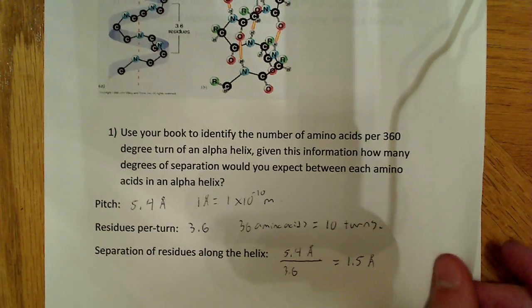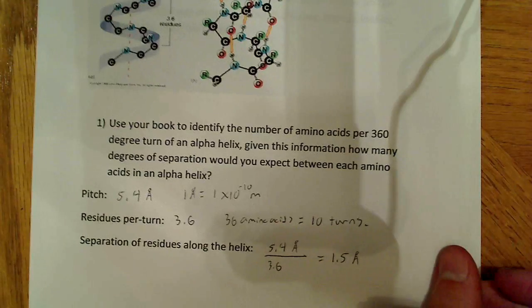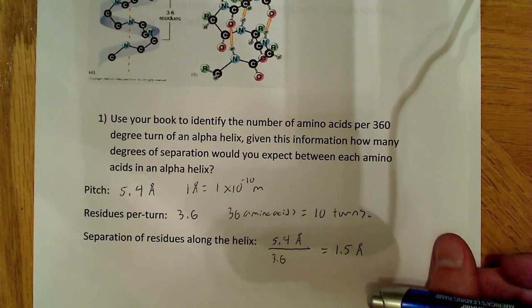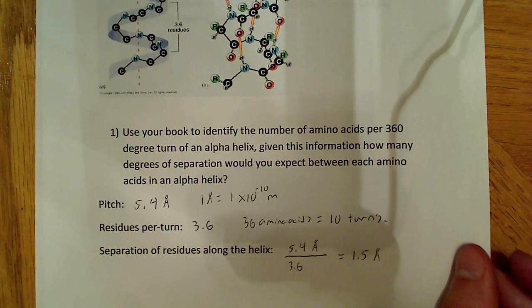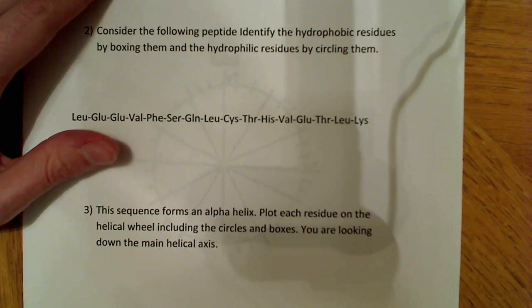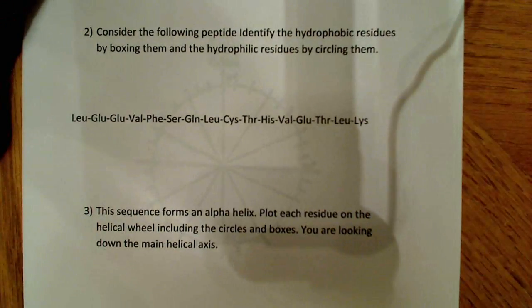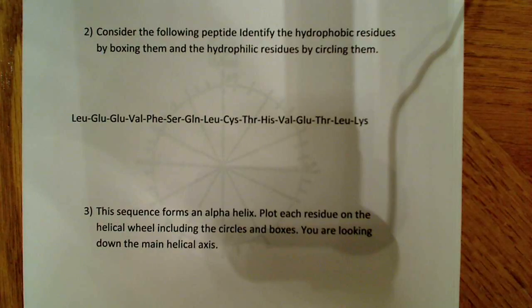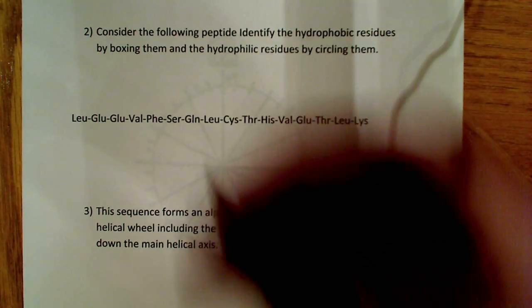So, that answers this. This is just information you could probably get from the book, or something like that. But, the idea is just to kind of lead you through the problem, and get you to see a little bit about the alpha helix before you start trying to do the actual problems. So, what I want to move on to here now is the actual problem-solving portion. And, it says, consider the following polypeptide. Identify the hydrophobic residues by boxing them, and the hydrophilic residues by circling them.